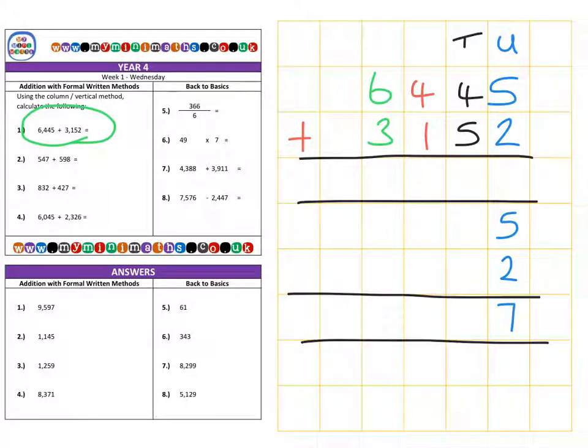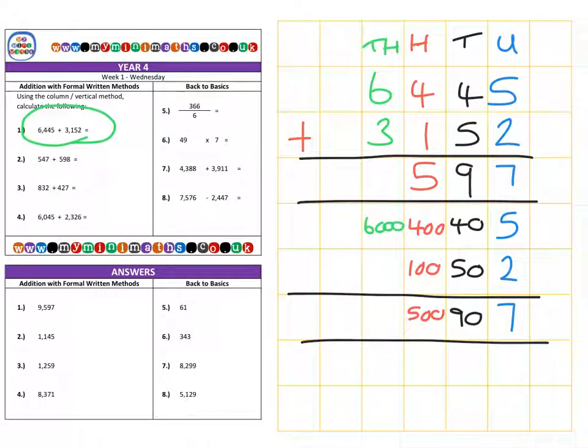Then we have 4 tens add 5 tens which gives us 90. Then we have 4 hundreds add 100 to give us a total of 500. And finally in our thousands column we have 6,000 added to 3,000 to give us a total of 9,000. So that gives us a final answer of 9,597.